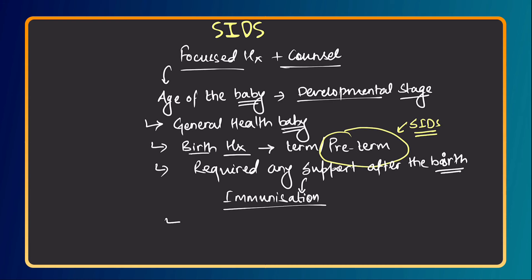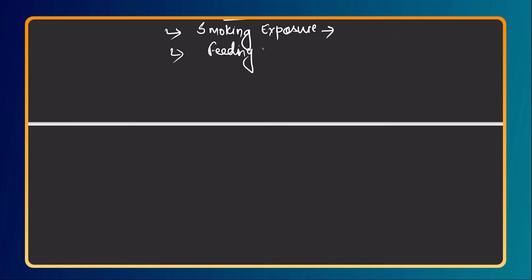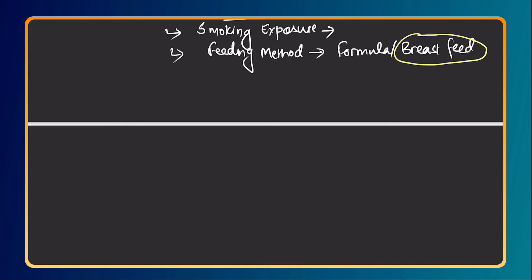Ask about immunization — whether age-appropriate vaccinations were done — to get an idea of risk factors, which we'll discuss when counselling the mother. The next question is about smoking exposure. Secondhand smoking is one of the important risk factors that can lead to SIDS, so ask if anyone in the family smokes at home. Then ask about feeding method — whether the baby was formula fed or breastfed — because breastfeeding has a protective effect against SIDS.